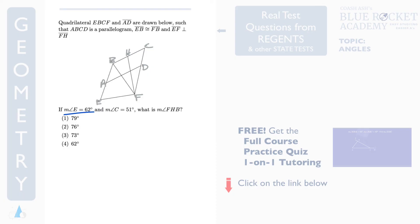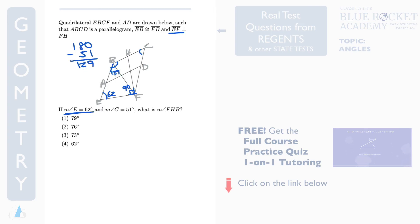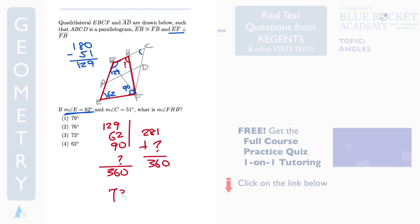This is a very popular problem — pause the video and see if you can solve it in less than 30 seconds. Measure angle E equals 62 degrees. EF is perpendicular to FH, so this angle is 90 degrees. This is a parallelogram and C is 51, so this is also 51, but more importantly this part is 180 minus 51, which gives 129. So thinking about this quadrilateral: 129 plus 62 plus 90 plus how much equals 360 degrees? Adding gives 281, and 360 minus 281 gives 79 degrees.